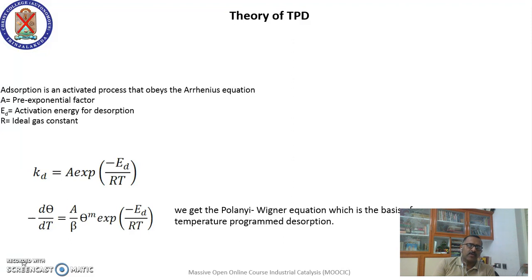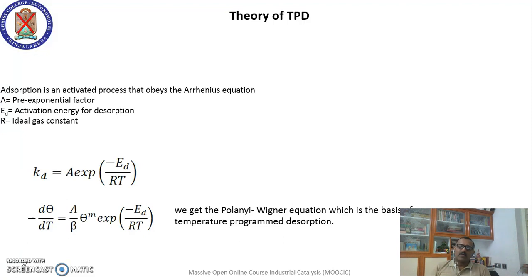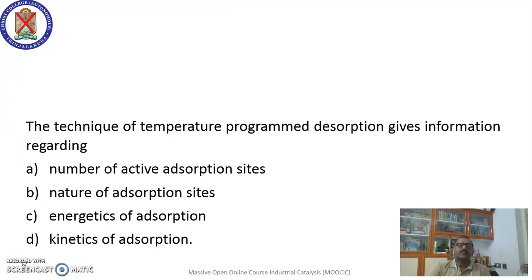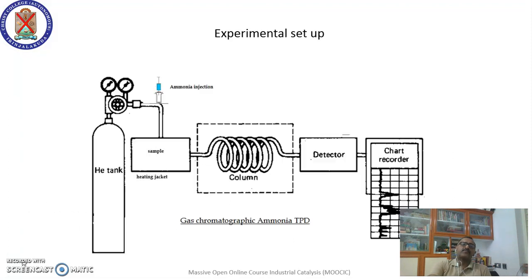Desorption is an activated process that obeys the Arrhenius equation: k = A · e^(−E_d / RT), where A is the pre-exponential factor, E_d is the activation energy for desorption, and R is the ideal gas constant. Combining these equations gives the Polanyi-Wigner equation, the basis of TPD, from which you can determine the activation energy for desorption. TPD provides information on the number of active adsorption sites, their nature, energetics, and kinetics.